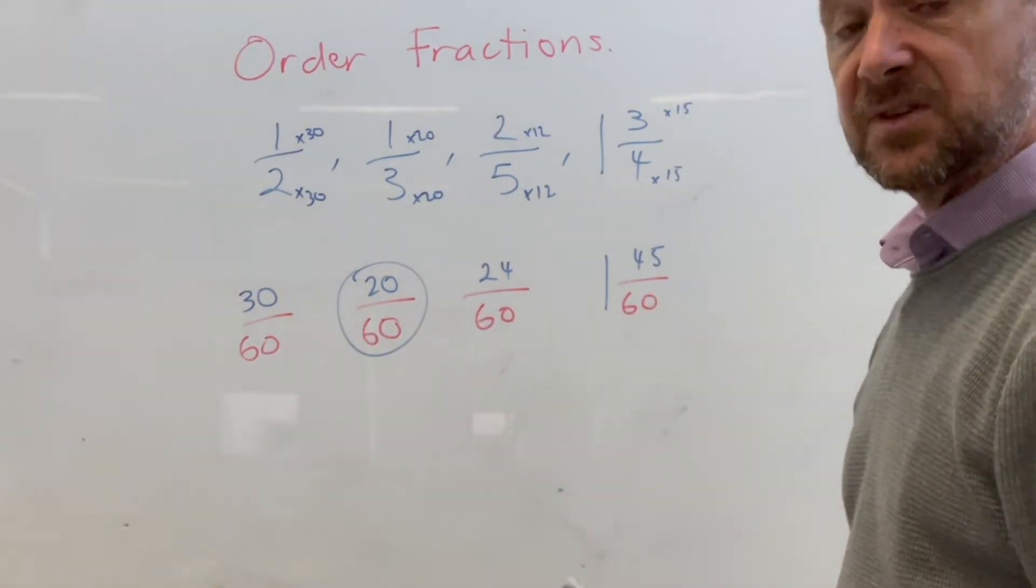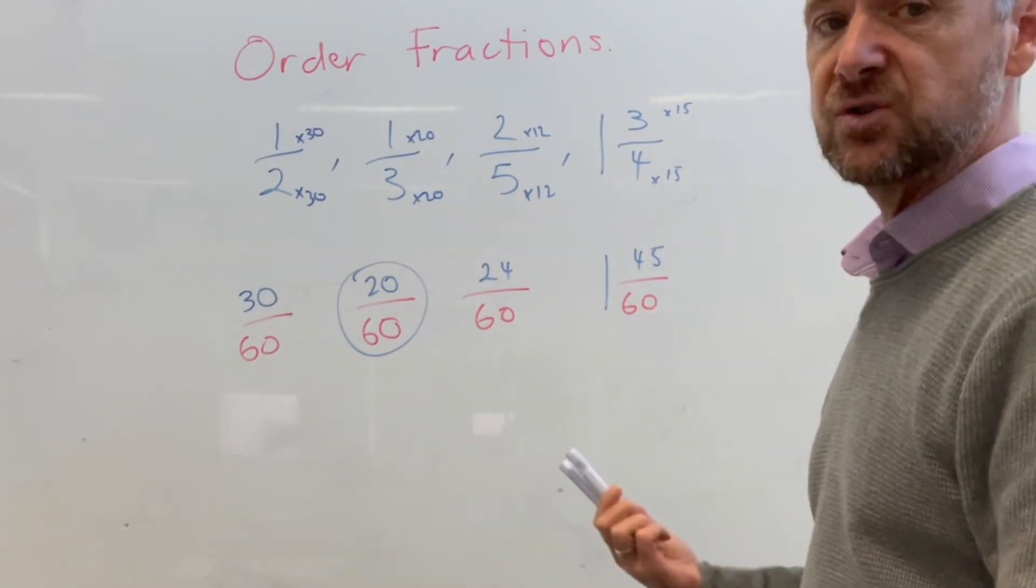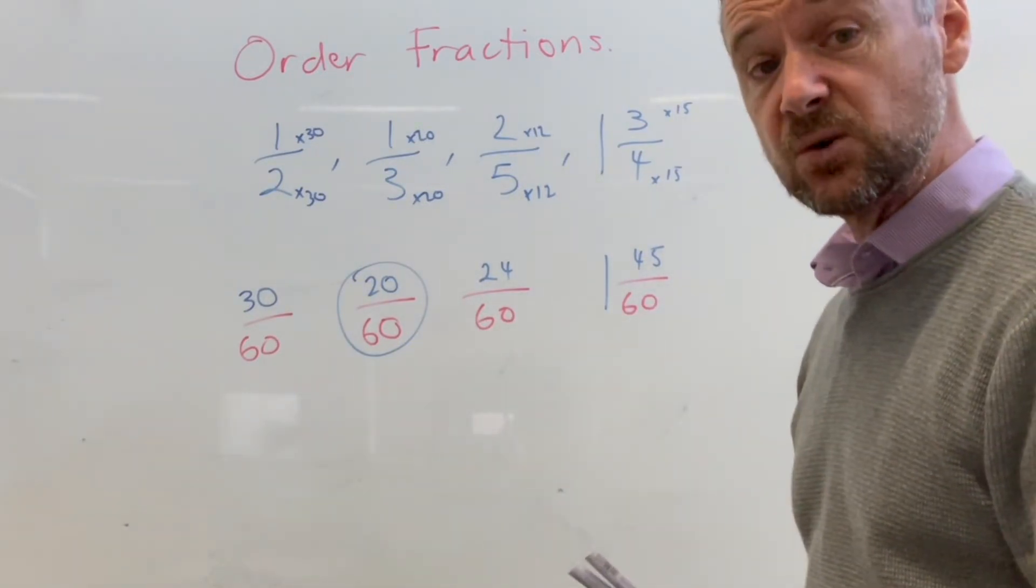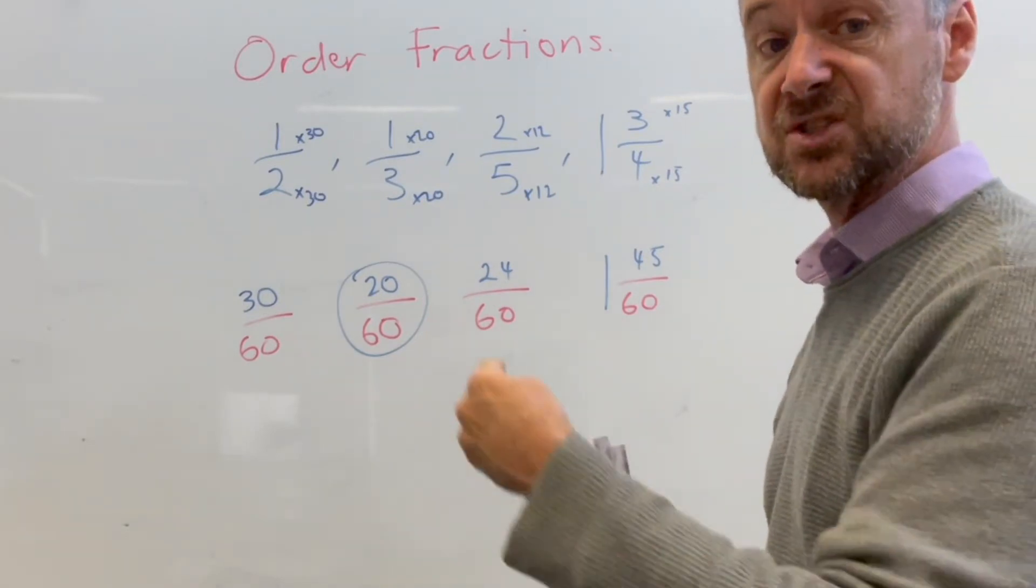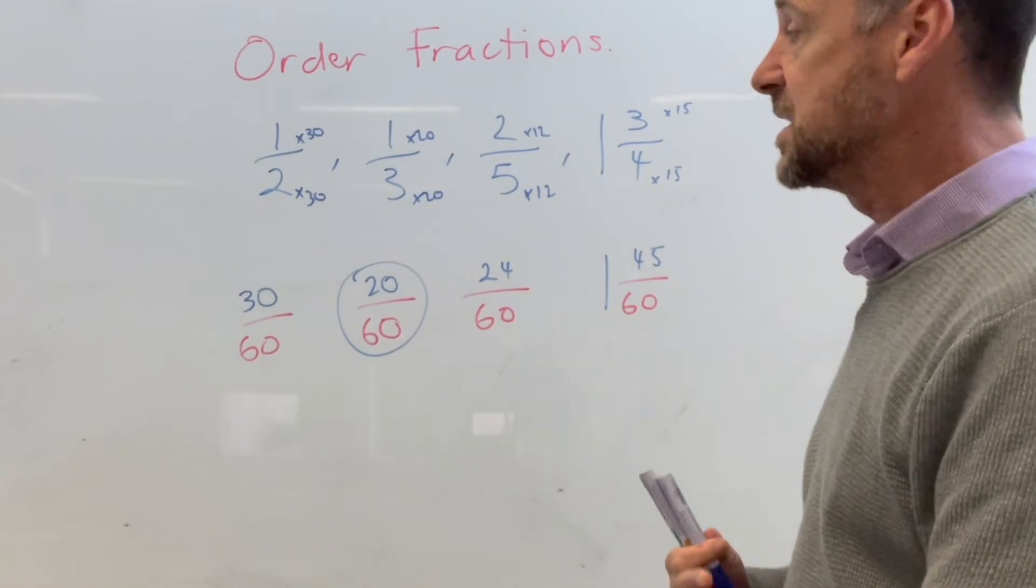Now when you go to write your answer for this though you need to use the original fractions. So it'll typically ask you to list them either in ascending order, which means from smallest to largest, or descending order from largest to smallest. So let's do ascending.